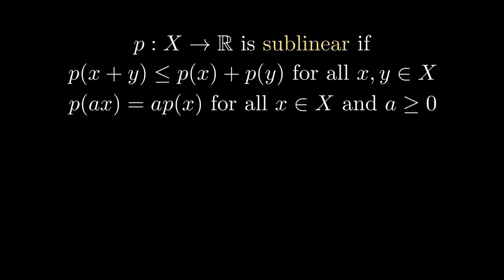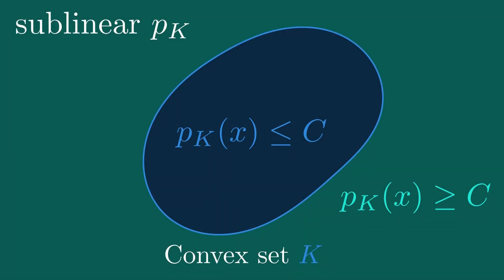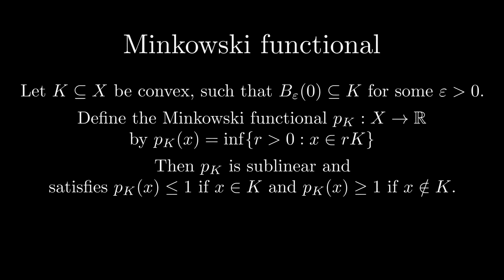A weaker notion than linearity is sublinearity. A functional is sublinear if the value of a sum is lower or equal to the sum of the values, and we can pull out any positive factors. This is weaker than linearity, so every linear functional is also sublinear. If we weaken linearity to sublinearity, we can find a functional which separates K from all points outside of K, as long as a small ball around zero is included in K. We are going to use this sublinear functional to describe the convex set analytically. Specifically, it can be defined like this — it's called the Minkowski functional of a convex set.